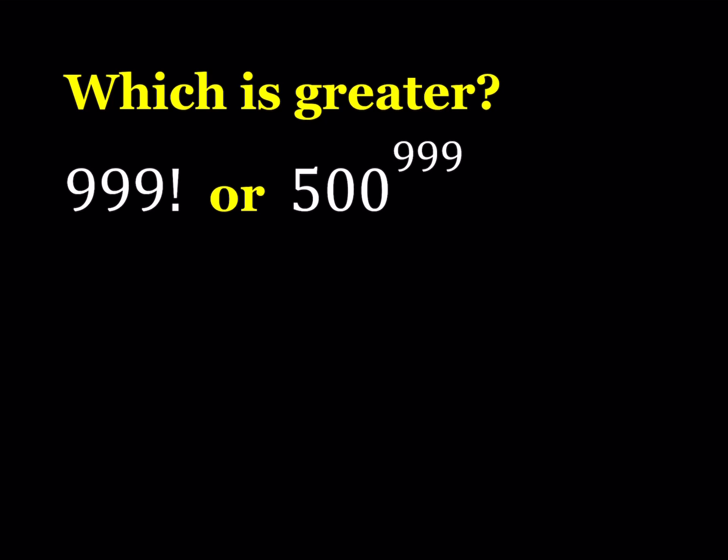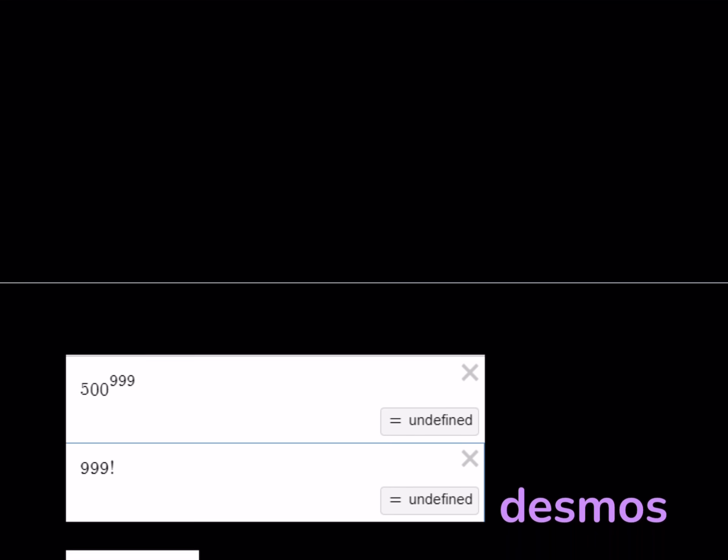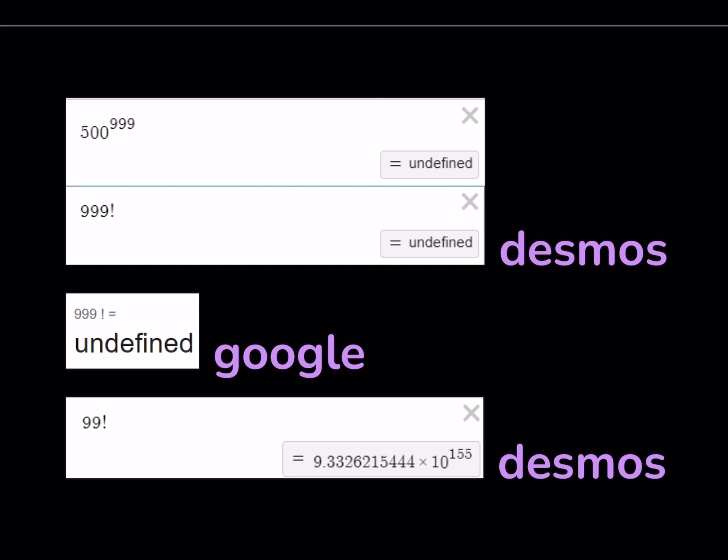I'll be presenting two methods, and before we get started I want to show you how large these numbers are. When we put it into Desmos, it says undefined for both of these numbers because they're very large. And Google doesn't give us a definite answer either. It says undefined.